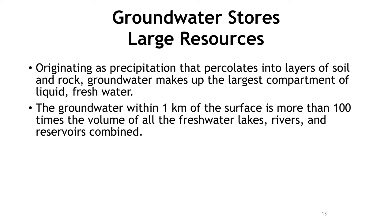Originating as precipitation that percolates into layers of soil and rock, groundwater makes up the largest compartment of liquid freshwater. The groundwater within 1 kilometer of the surface is more than 100 times the volume of all the freshwater lakes, rivers, and reservoirs combined.